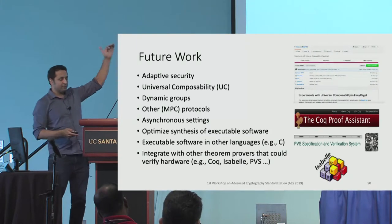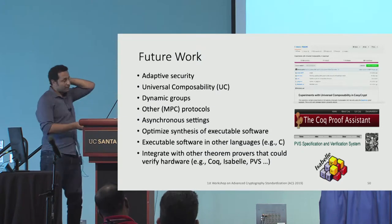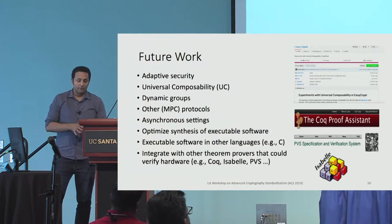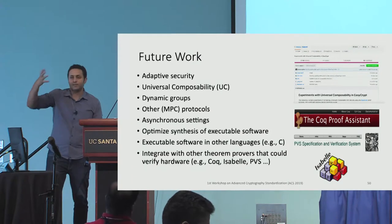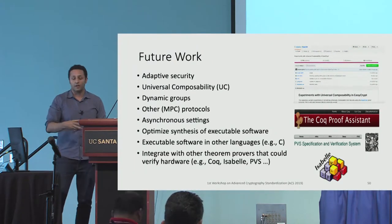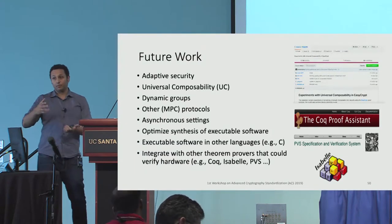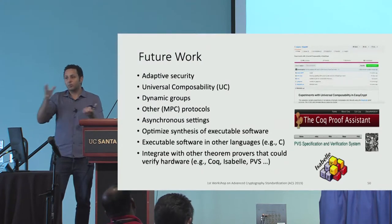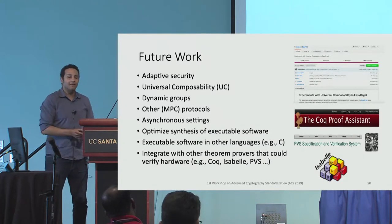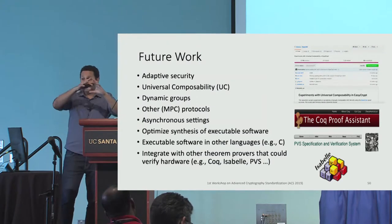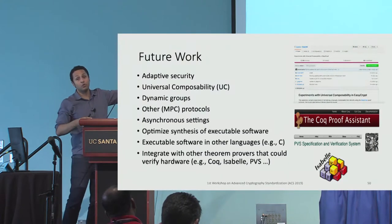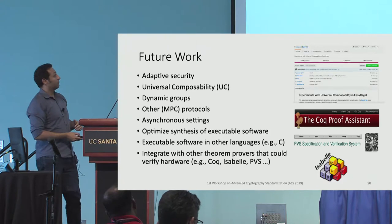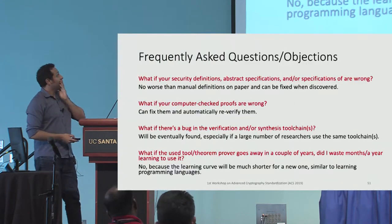Future work also includes using other interactive theorem provers beyond EasyCrypt. EasyCrypt is really focused on cryptography, but things like Coq, Isabelle, and PVS allow reasoning about the MPC software itself — sitting in a VM or container. If you've heard of seL4, the verified microkernel formalized in Isabelle, ultimately you'd want to verify everything end to end. To compose the cryptographic verification with the systems verification you'd need to do the EasyCrypt work in Isabelle as well. It's doable in principle — it just takes a lot of effort.